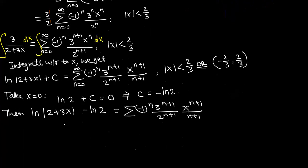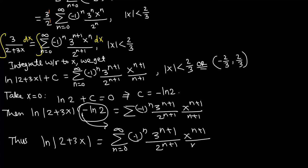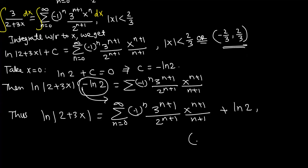Moving negative natural log of 2 to the other side, we get the final power series for natural log of 2 plus 3x: the sum from n equals 0 to infinity of negative 1 to the n times 3 raised to n plus 1 over 2 raised to n plus 1 times x raised to n plus 1 over n plus 1, plus natural log of 2. The interval of convergence is negative 2/3 to positive 2/3.